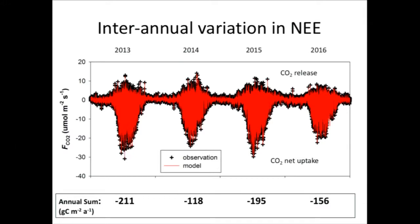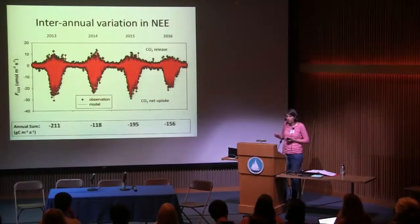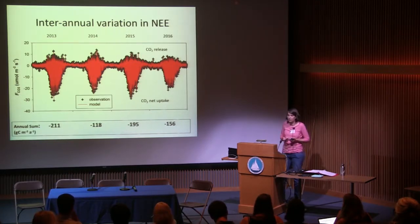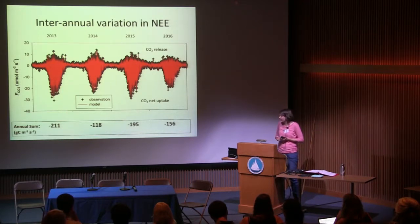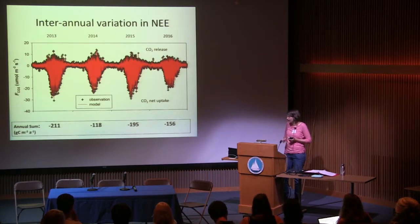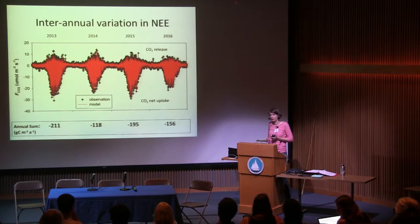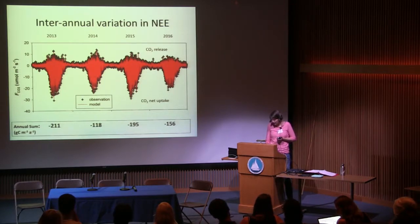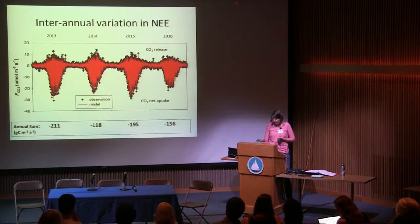It's important to note that these are the net CO2 fluxes — the sum of respiration and photosynthesis, or in this context, ecosystem respiration and gross primary productivity. When we model those two component fluxes, it becomes clear that the year-to-year variation is driven by changes in GPP and not so much by changes in respiration. This increase in GPP in the two productive years corresponds very well with biomass measurements.